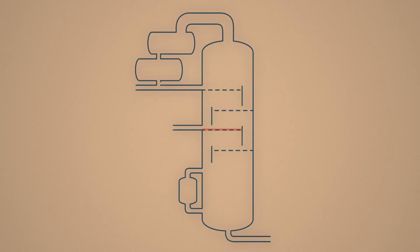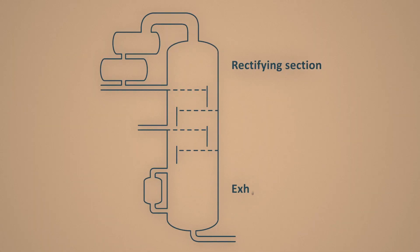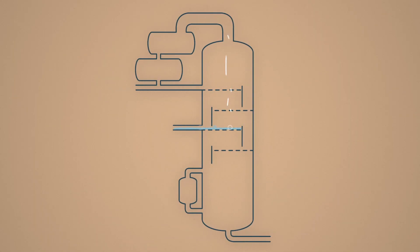Initial mixture is fed to the feed tray. It is usually liquid, but sometimes it can be vapor or vapor plus liquid. It divides the tower into two sections, the top rectifying section and the bottom exhausting section. The liquid flows from the upper tray to the lower one, and while contacting the ascending non-equilibrium vapor, leaves the low boiling component and takes away the high boiling one.